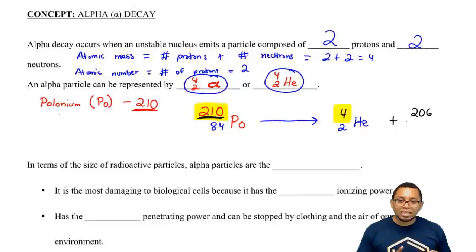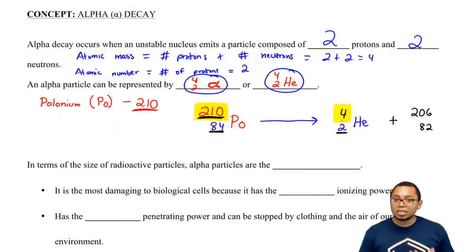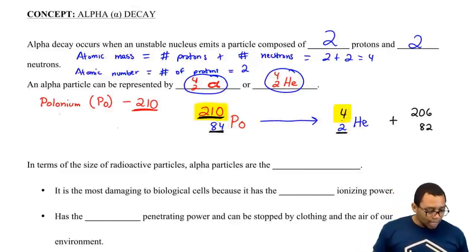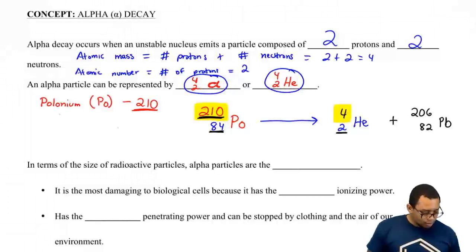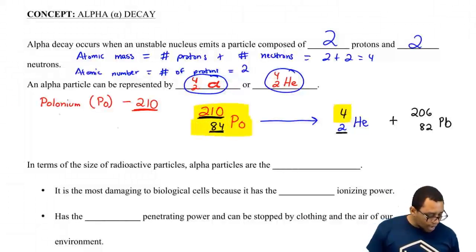Also, your atomic numbers need to match on both sides. This atomic number is 2, we need it to add up to 84, so the new element would have to have 82, because 82 plus 2 gives us 84. What element would that be? Well, that would be lead. So the alpha decay of polonium-210 creates a brand new element, lead-206.